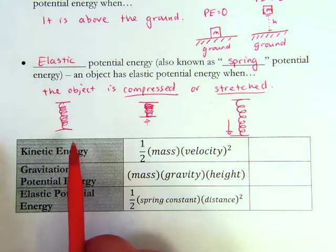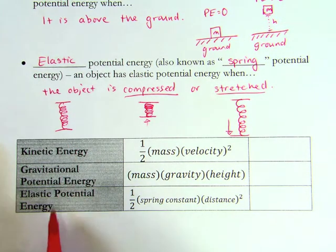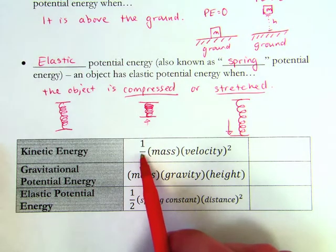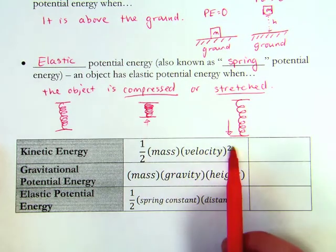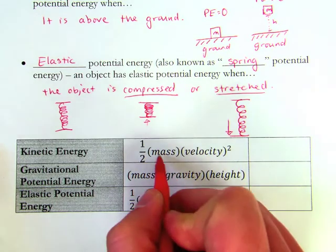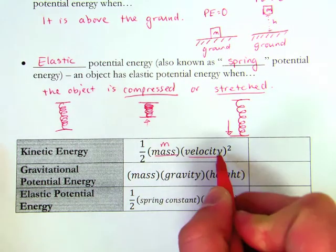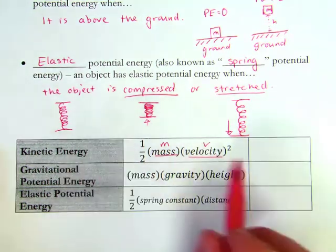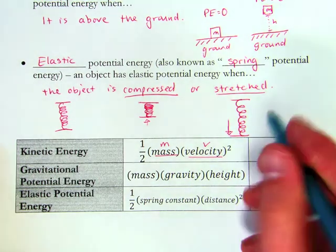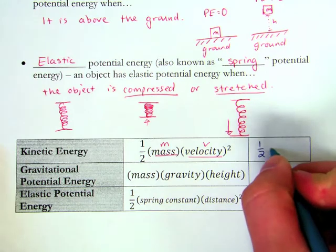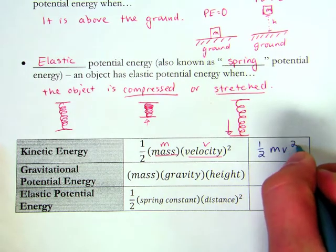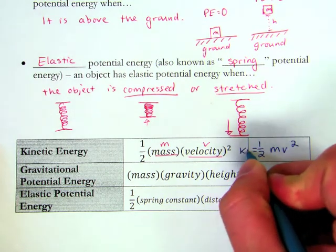We have kinetic energy, gravitational potential energy, and elastic potential energy. So for kinetic energy, the formula is one-half mass times velocity squared. So if we pick our variables, I know mass is going to be m, velocity is going to be v, so kinetic energy is going to be 1/2 mv squared.